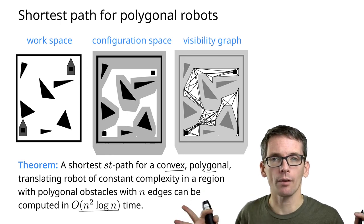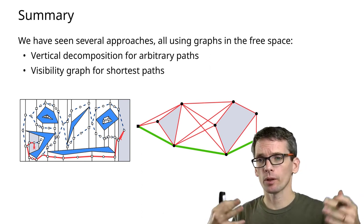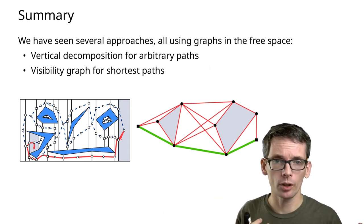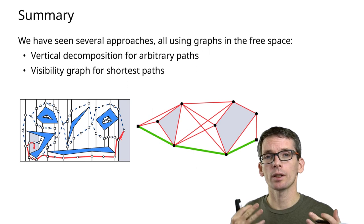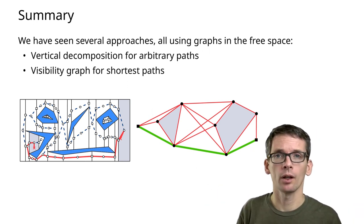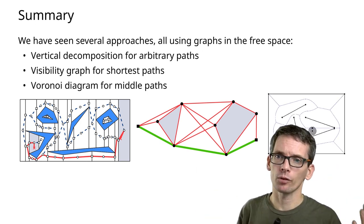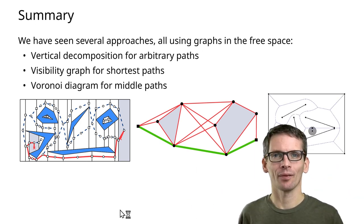What have we seen overall? We've seen roadmaps and how to compute them using vertical decompositions. We've seen visibility graphs to compute shortest paths. We've also briefly mentioned how to use Voronoi diagrams for middle paths. That's all for today.